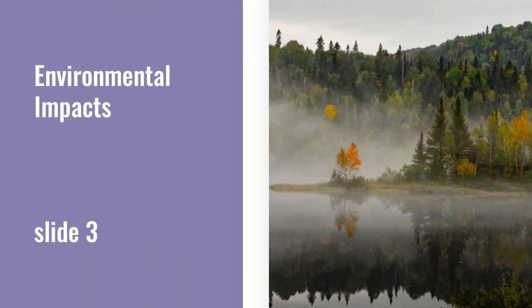Photochemical smog can have an effect on the environment, on people's health, and even various materials. One of the ways it affects the environment is through plants. Chemicals such as nitrogen oxides, ozone, and nitrate can have harmful effects on plants. These substances can reduce or even stop growth in plants by reducing photosynthesis, even in small quantities.